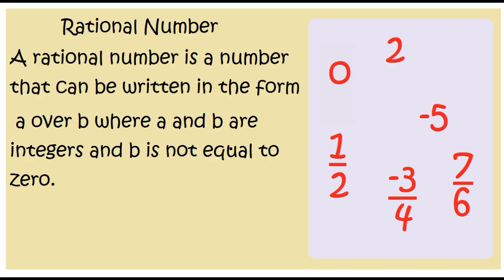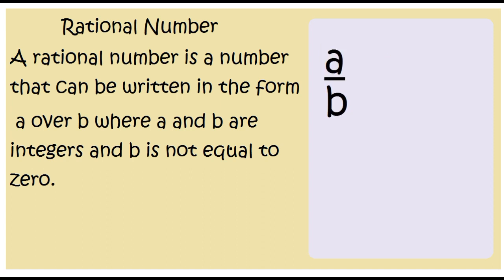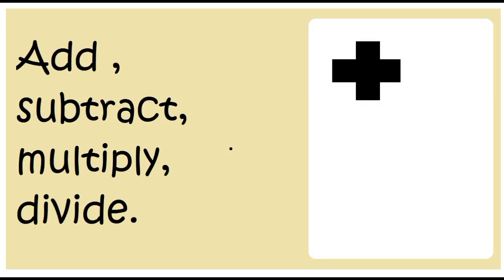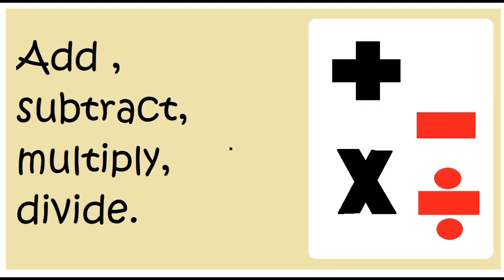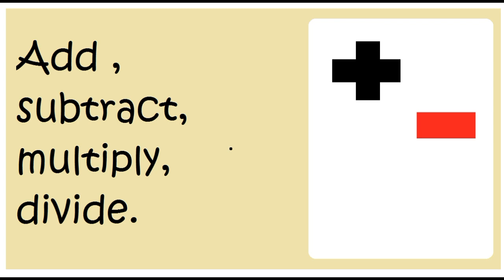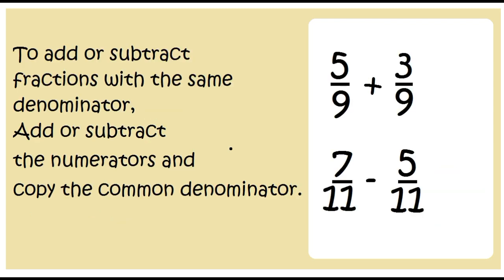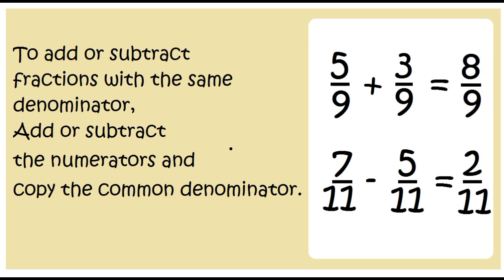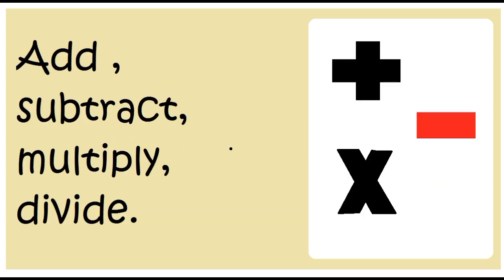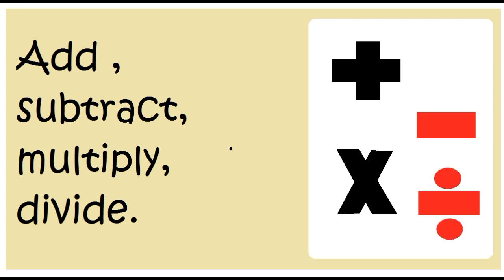A rational number is a number that can be written in the form A over B, where A and B are integers and B is not equal to zero. Add, subtract, multiply, divide. Add, subtract, multiply, divide. To add or subtract fractions with the same denominator, add or subtract the numerators and copy the common denominator.